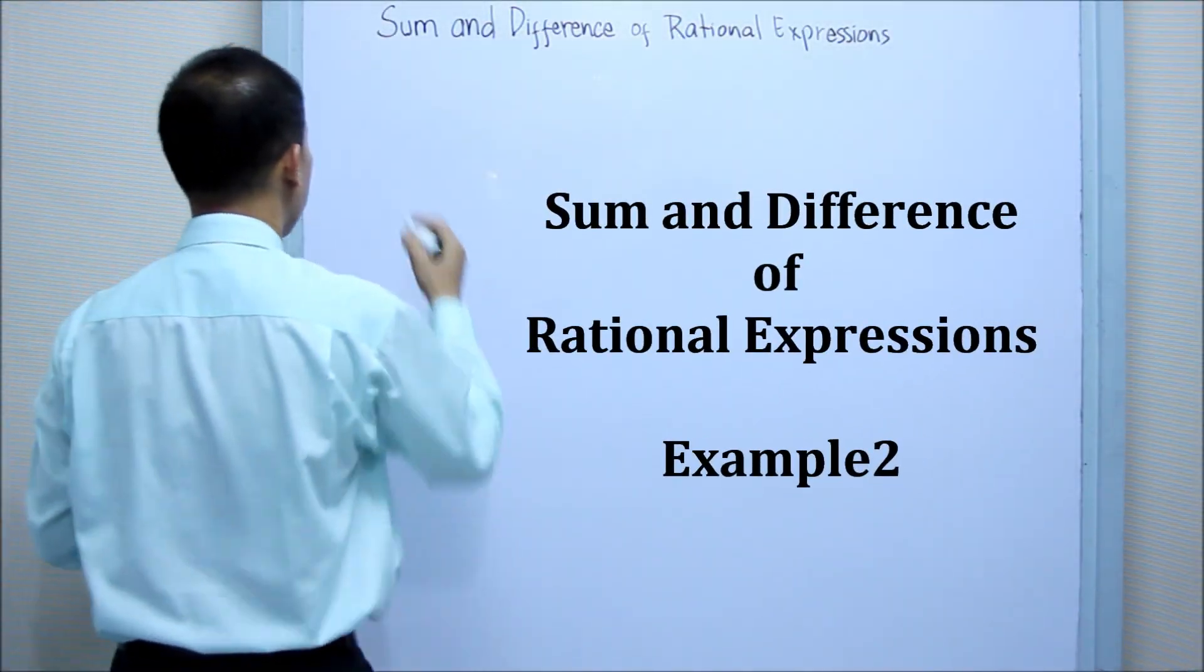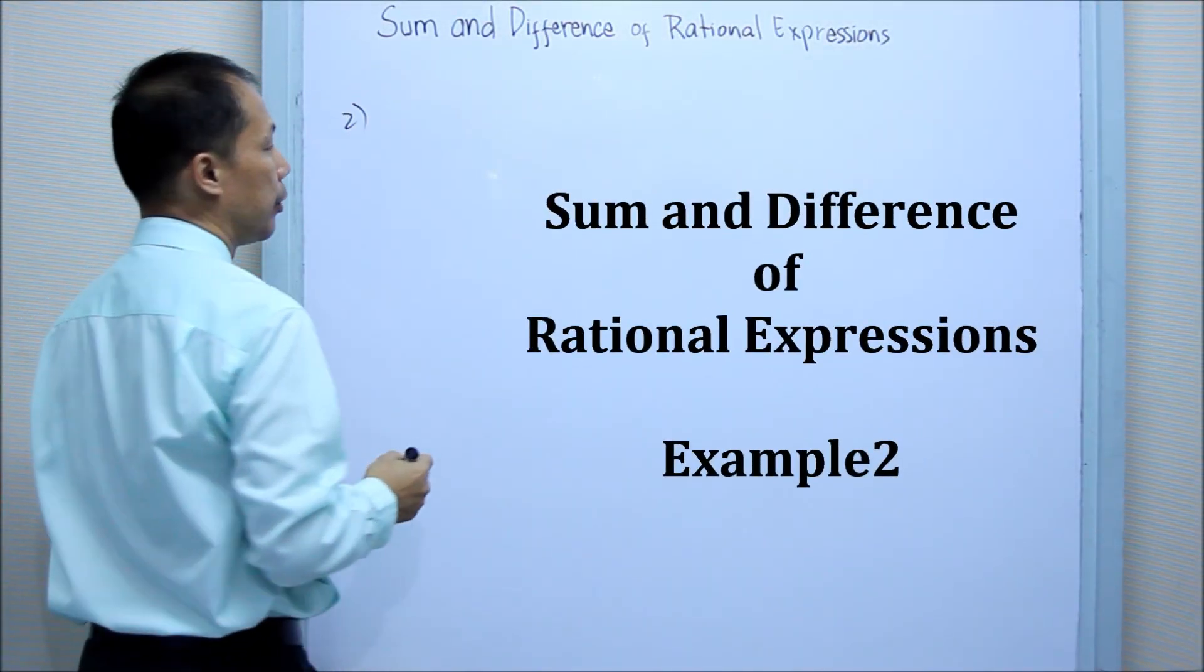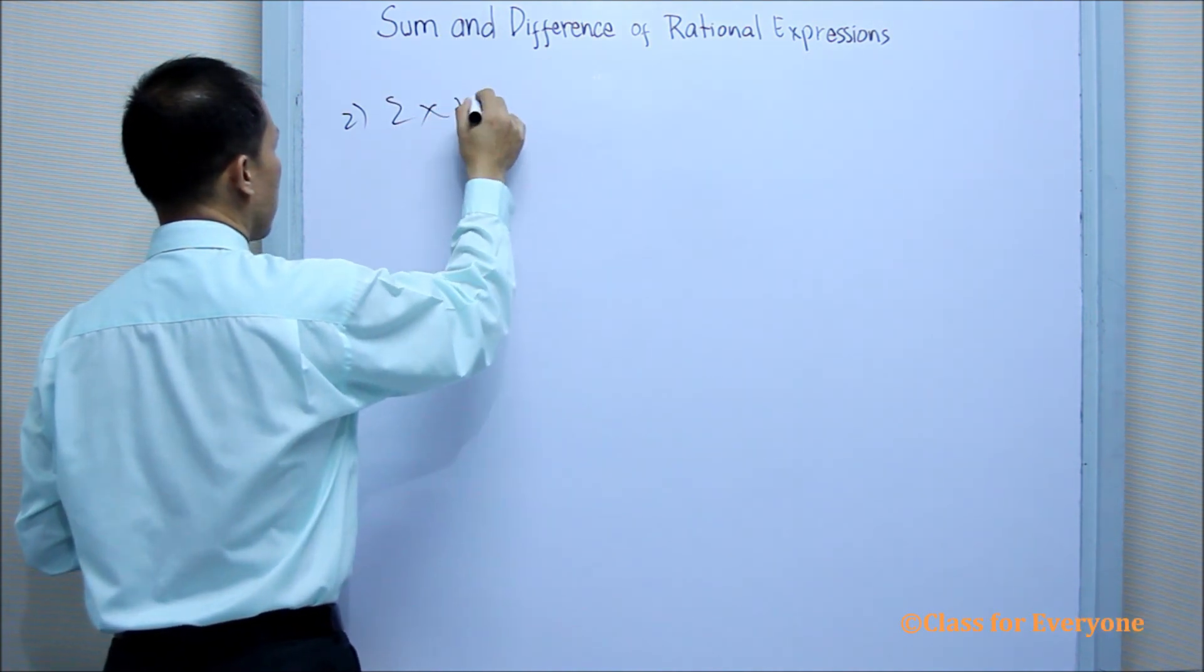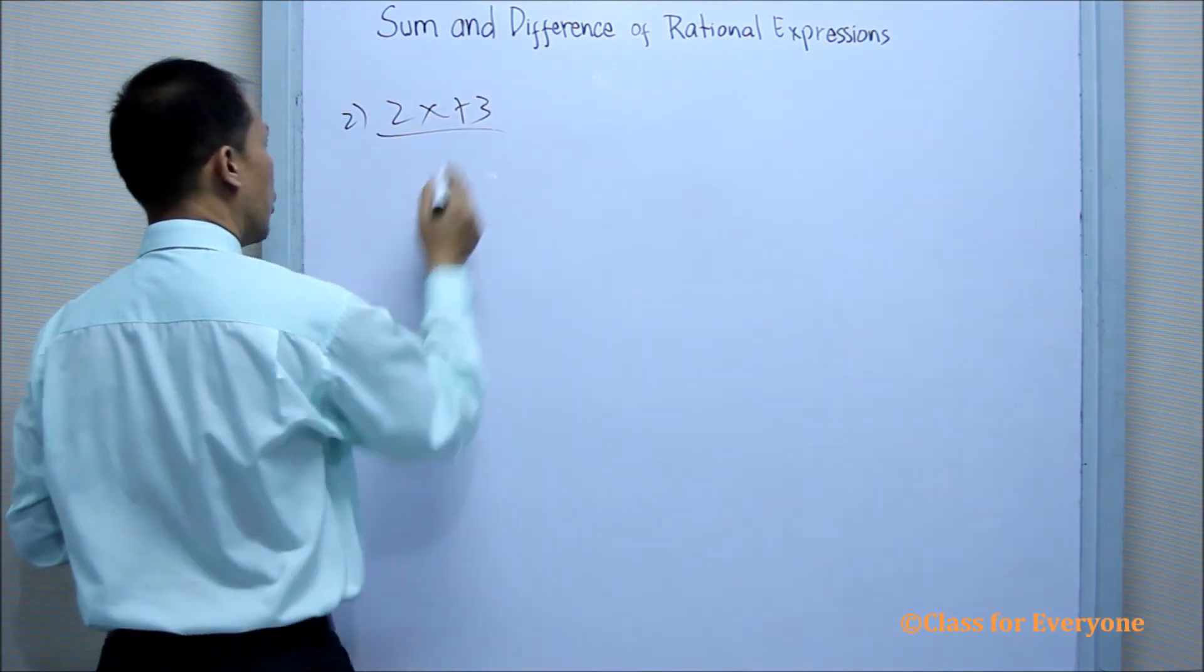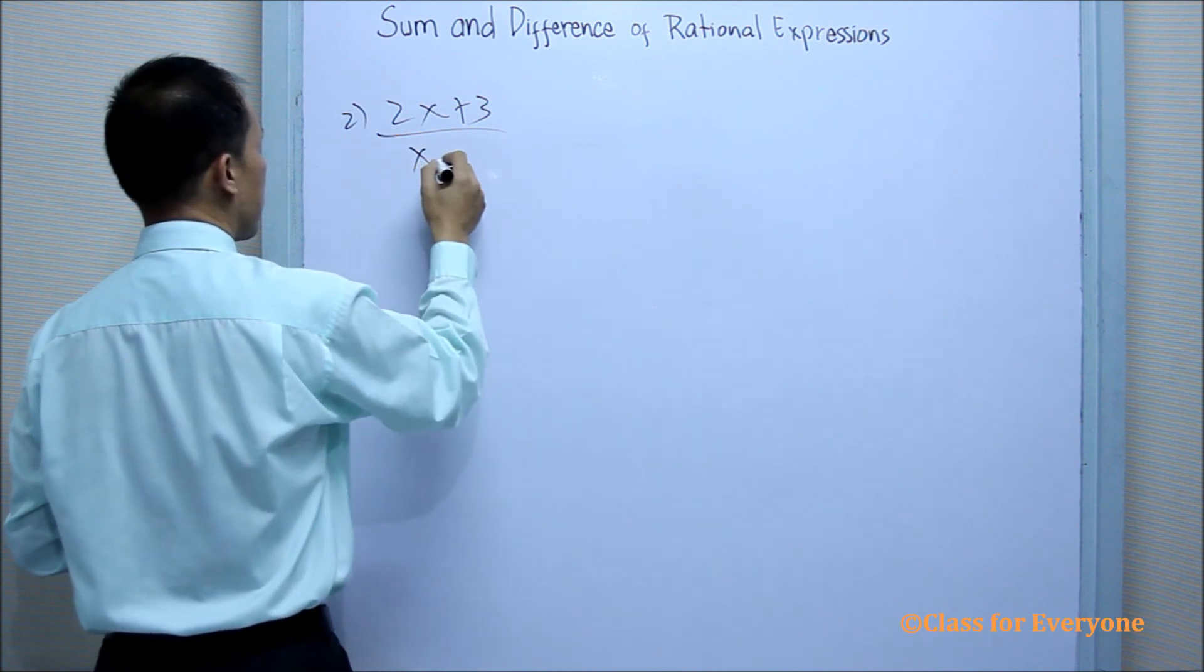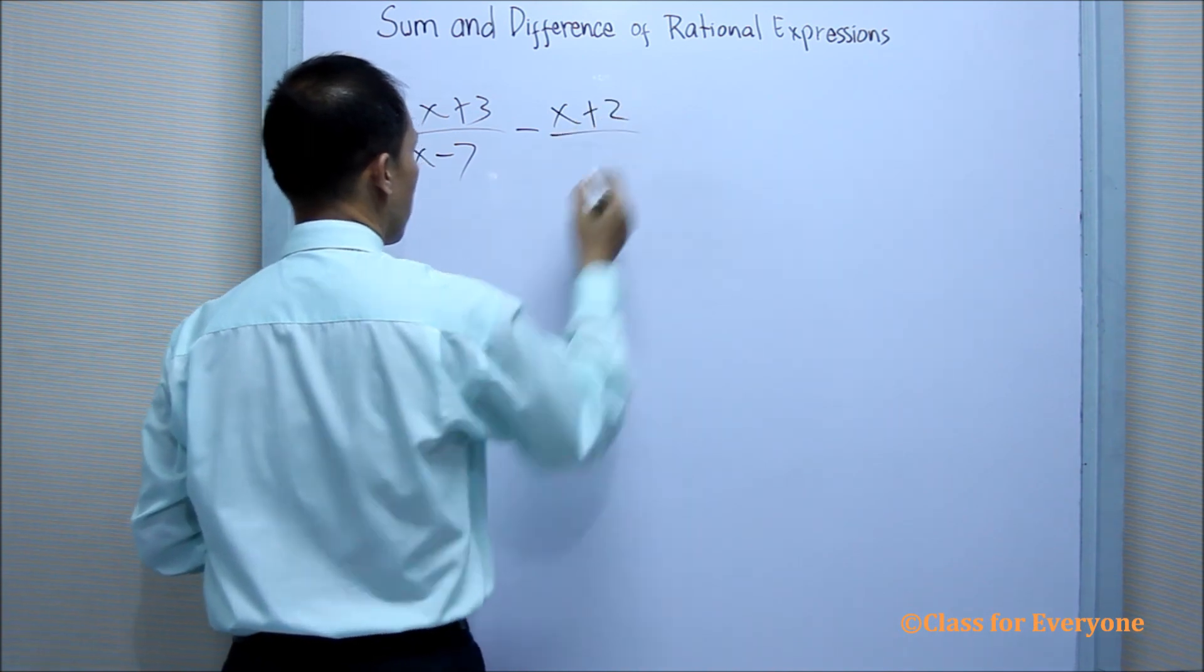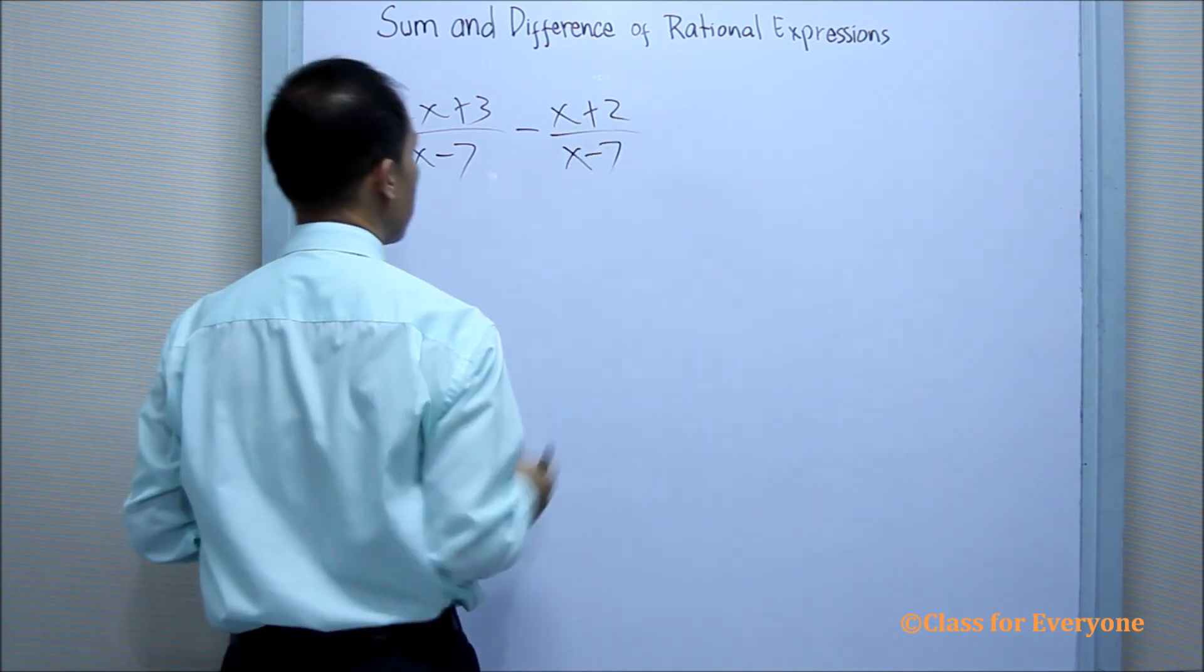Let us have another example, example number 2. Suppose we have 2x plus 3 over x minus 7 minus x plus 2 over x minus 7.